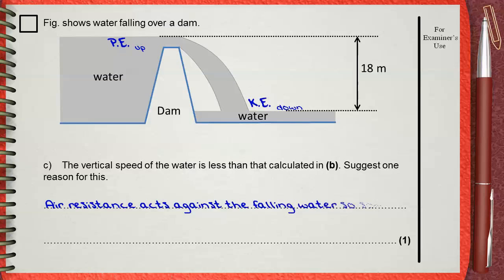So simply we say that air resistance acts against the falling water, so some potential energy changes to heat and sound.